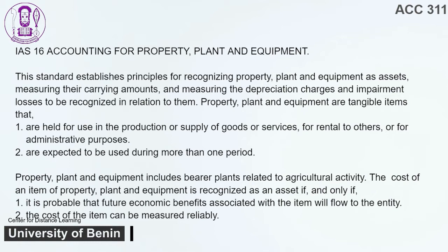Property, plant, and equipment include bearer plants related to agricultural activity. The cost of an item of property, plant, and equipment is recognized as an asset if, and only if: 1. It is probable that future economic benefits associated with the item will flow to the entity. 2. The cost of the item can be measured reliably.